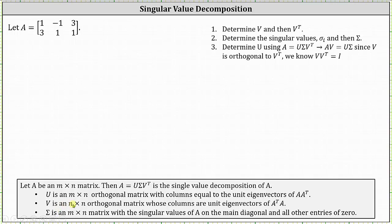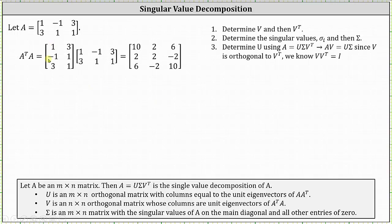Because matrix V is an N by N orthogonal matrix whose columns are unit eigenvectors of A transpose times A, we'll begin by determining A transpose times A. To find A transpose, the first row of matrix A becomes the first column of A transpose, and the second row becomes the second column. A transpose times A results in the three by three matrix shown here. You may want to pause the video and check this product.